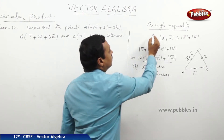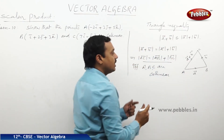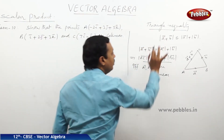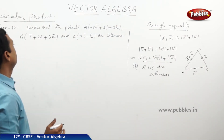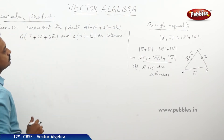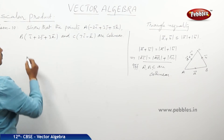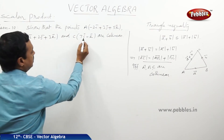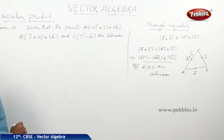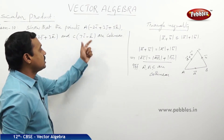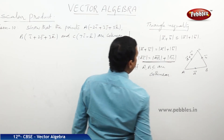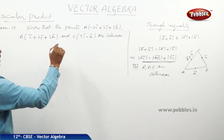So in the triangle inequality, equality holds when the given points are collinear; if they are non-collinear, then the strict inequality holds. Now here is the tenth problem: show that the points A(−2i+3j+5k), B(i+2j+3k) and C(7i−k) are collinear. Three points are given and we have to prove they are collinear using this equality condition.